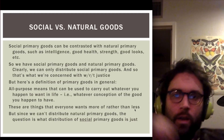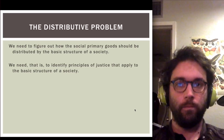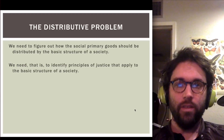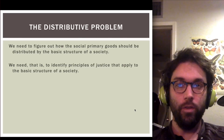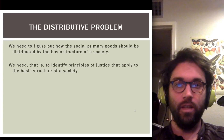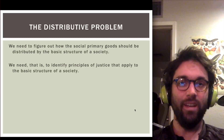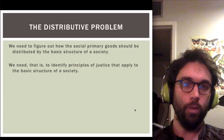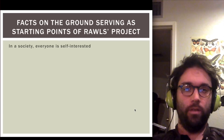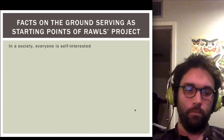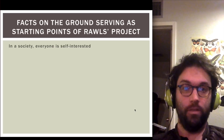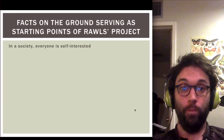Our main task is to figure out how social primary goods should be distributed by the basic structure of society — to identify principles of justice that apply to that structure and tell us how to distribute those goods. Now here are some uncontroversial empirical facts that serve as starting points for Rawls's project.